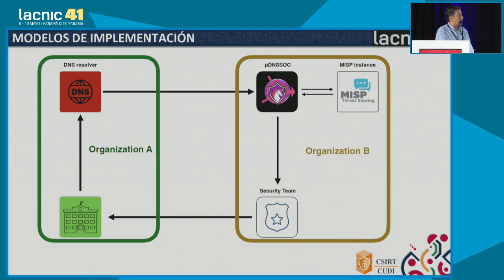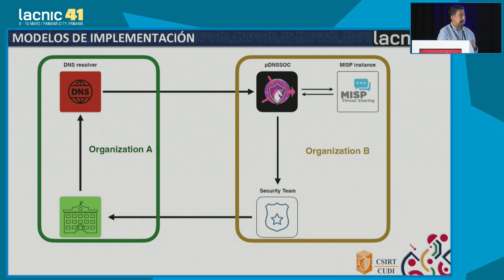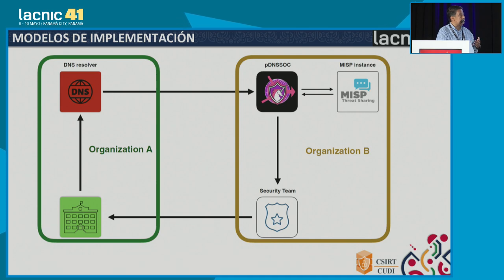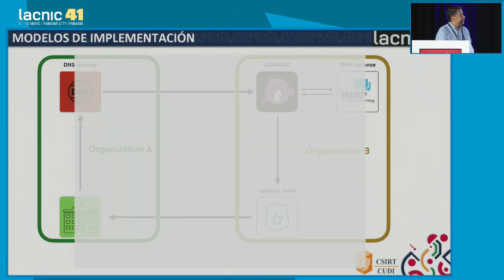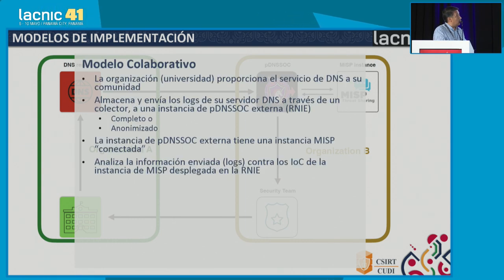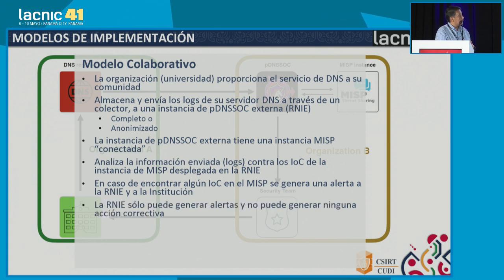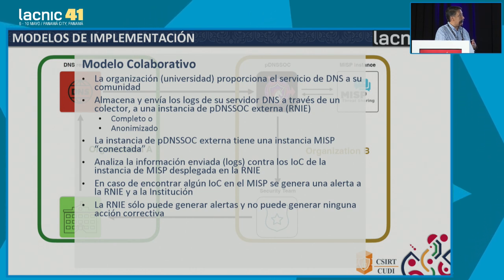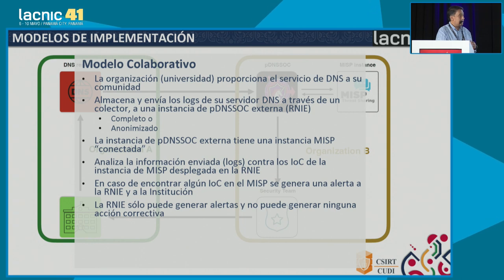There are many implementation models. For example, this is a collaborative model where the university or the organization can have deployed its DNS server, and some other external instance — for example, the National Education and Research Network in Mexico — has deployed the PDNS SOC and the MISP instance. What they do is submit through the collector the information on their DNS server. The university provides the DNS service to its community, the logs are stored, and they can be forwarded to an external instance. Our DNS SOC instance has a MISP instance that is connected, where the information is analyzed against these indicators of compromise.